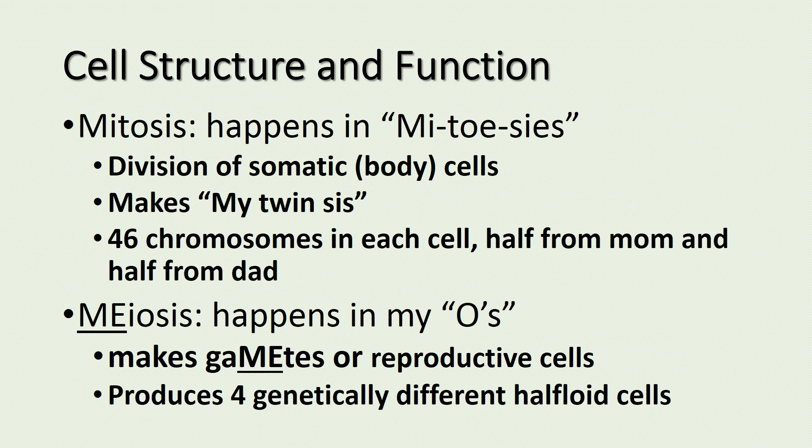There are two types of cell division. The first one, mitosis, happens in somatic or body cells. Mitosis makes two identical cells that have 46 chromosomes in each cell. The second type, meiosis, happens in reproductive cells. It makes four genetically different haploid cells that have half the number of chromosomes of the original cell.